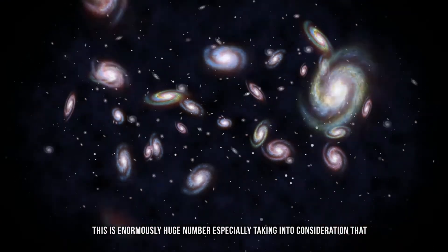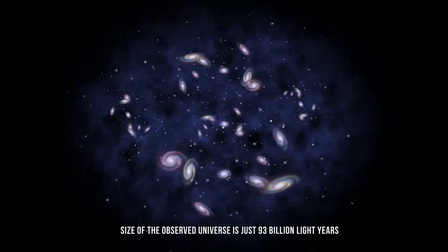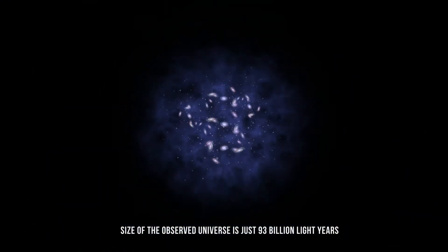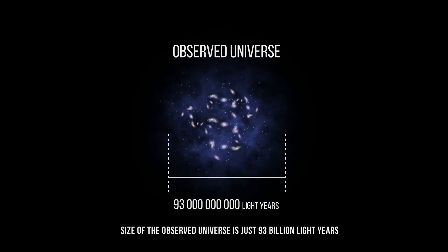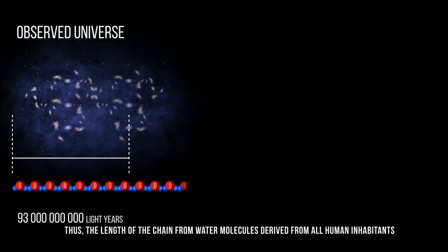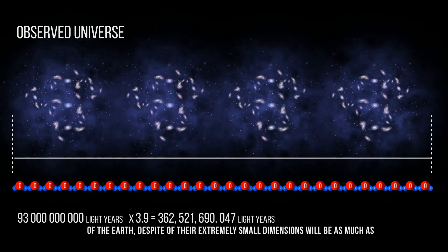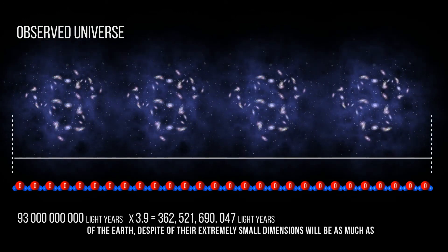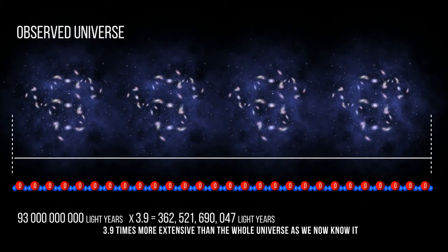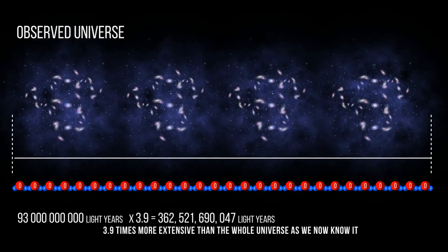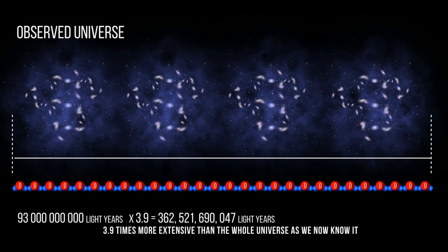This is an enormously huge number, especially taking into consideration that size of the observed universe is just 93 billion light years. Thus the length of the chain from water molecules derived from all human inhabitants of the Earth, despite their extremely small dimensions, will be as much as 3.9 times more extensive than the whole universe as we now know it.